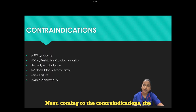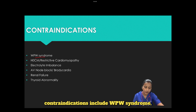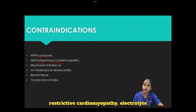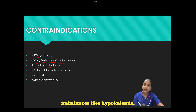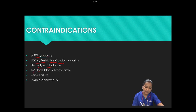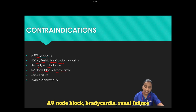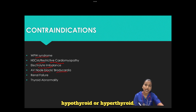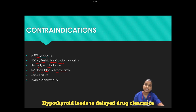Contraindications include WPW syndrome, hypertrophic obstructive cardiomyopathy, restrictive cardiomyopathy, electrolyte imbalances like hypokalemia, hypomagnesemia, hypercalcemia or hypocalcemia, AV node block, bradycardia, renal failure, and thyroid abnormalities — either hypothyroid or hyperthyroid. Hypothyroidism leads to delayed drug clearance and hyperthyroidism does the opposite.